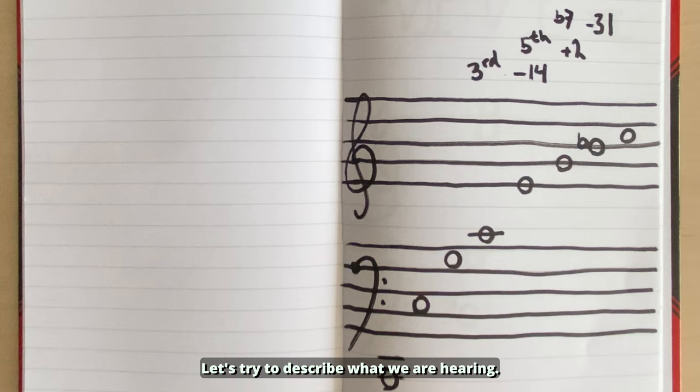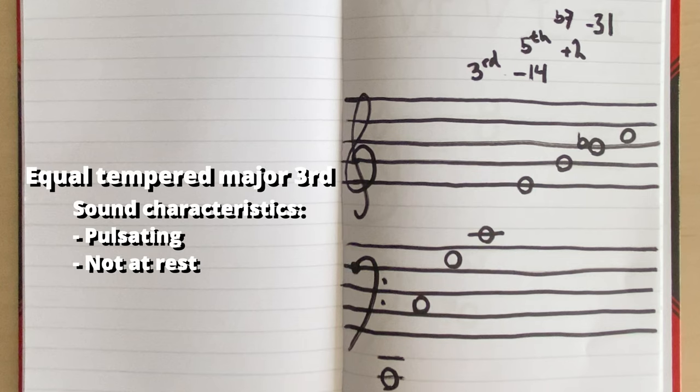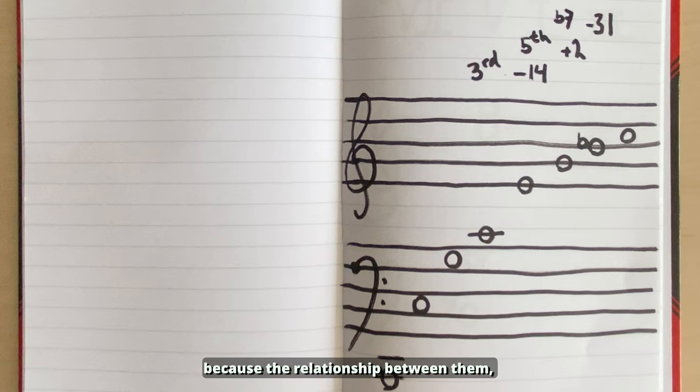Let's try to describe what we're hearing. If we begin with the equal tempered one, we can hear a slight pulsation from the relationship or interference between the two notes. The just intonated one is more or less stable because the relationship between them as well as the sound waves of the two notes are much more consonant.